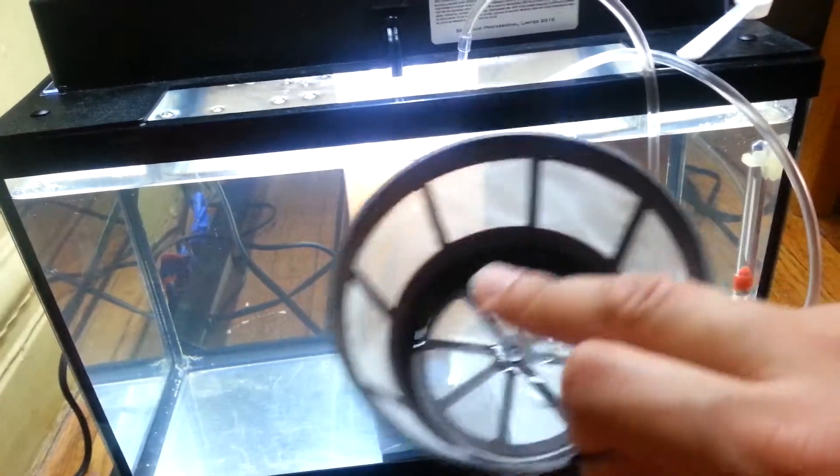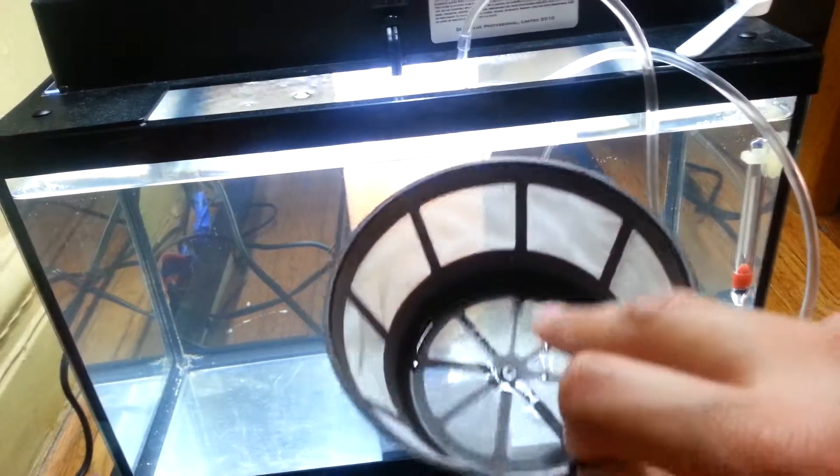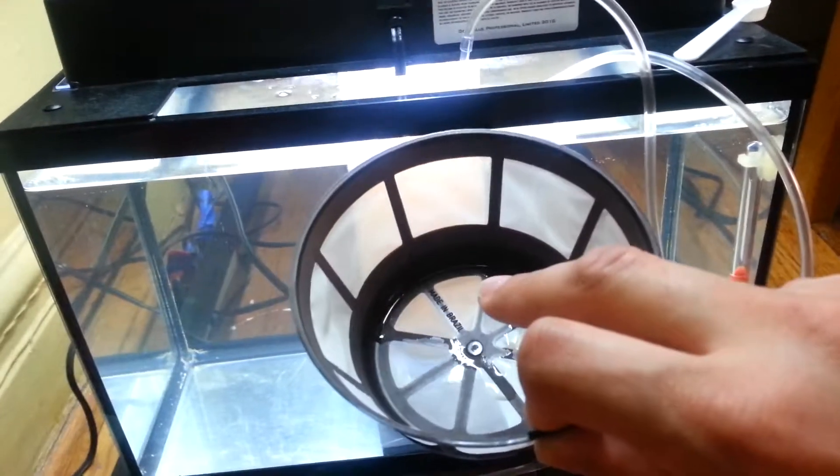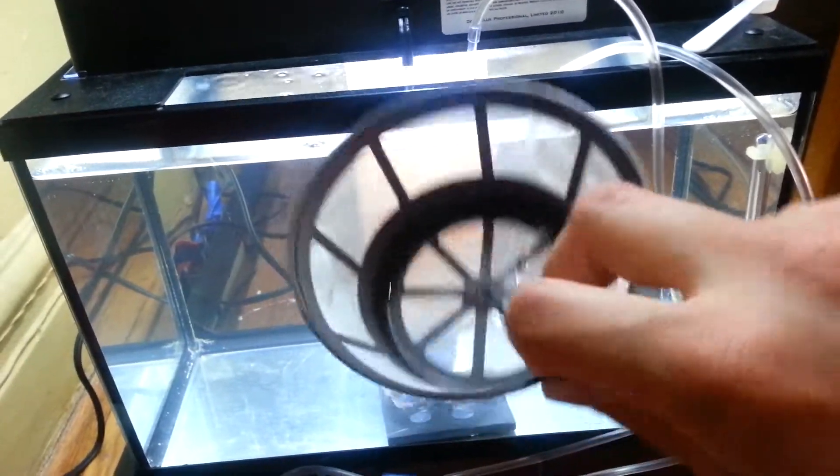Rinse it out thoroughly. You rinse out all that salt. The chlorine in the tap water kills the bacteria and makes the brine shrimp nice and fresh to feed to your fry. Then once you're done with that, pour the brine shrimp into a little container. Once again, use your eyedropper and you can feed them.